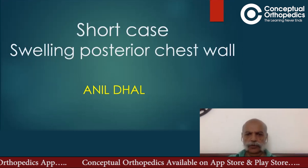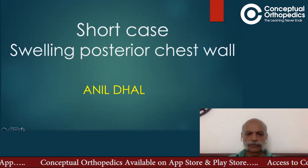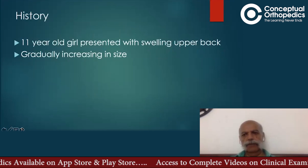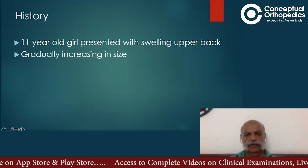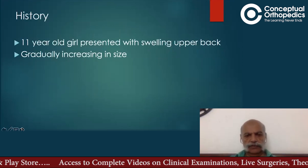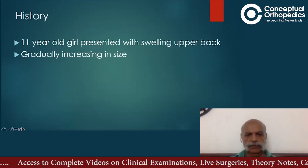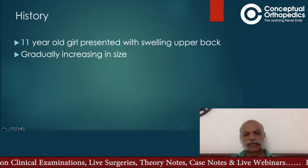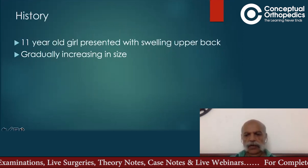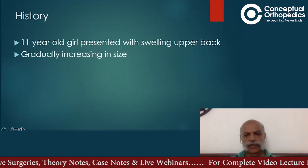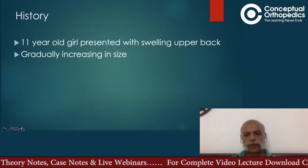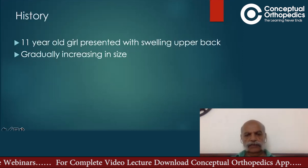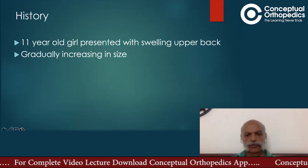Moving on to the history of this patient: this patient happens to be an 11-year-old girl who presented to us with a swelling in the upper back region on the left side. On talking to the mother, who was accompanying the child, she told us that the swelling has been gradually increasing in size. She first noticed it when the child was just three years old, and at that point the size of the swelling was akin to a small lemon.